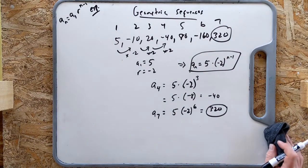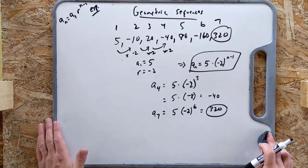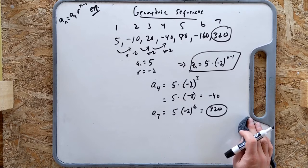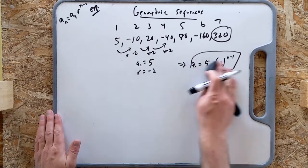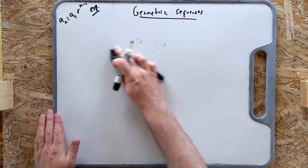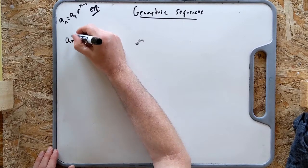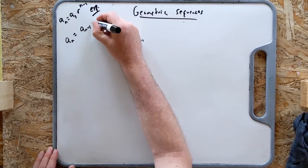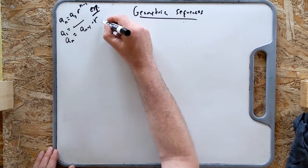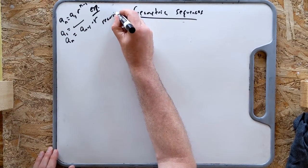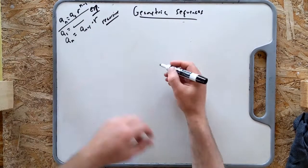That's the explicit formula for geometric sequences. Now we're going to do the recursive one, just like we had a recursive one for arithmetic. The recursive formula is simply a_n equals a_(n-1) times r, and you have to set a starting value — a_1 equals some number. I'll do an example with 4, 8, 16, 32 again. We know r is 2.